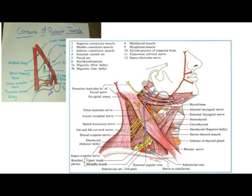The supraclavicular triangle also contains the nerve to serratus anterior muscle, which has the root value of C5, C6, and C7. It passes behind the brachial plexus, descends in front of the serratus anterior muscle, and gives branches to this muscle.